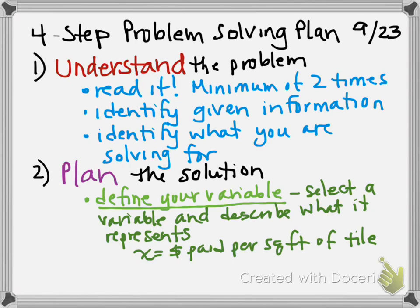You basically take the question you're solving for and turn that into your variable's definition. For example, 'How much did Ling pay per square foot for tile?' — you would say x equals money paid per square foot of tile. You can use abbreviations — that's okay. That's your number one thing: you must define your variable. A quarter of the points I'm looking for are right there. Then we're going to use that variable to come up with an expression or an equation to solve.